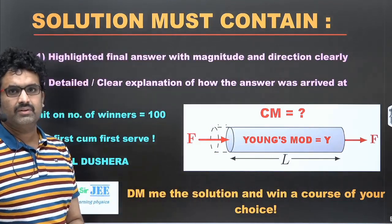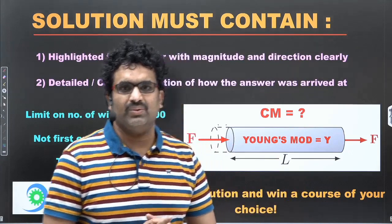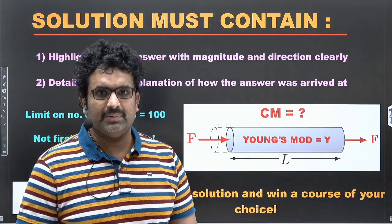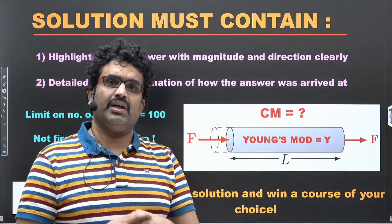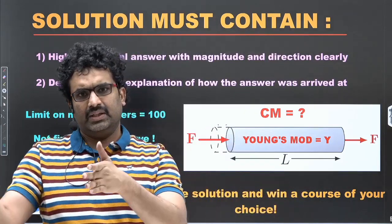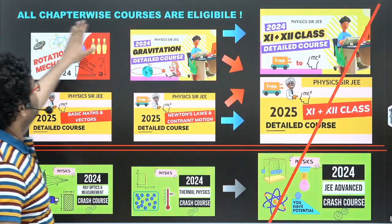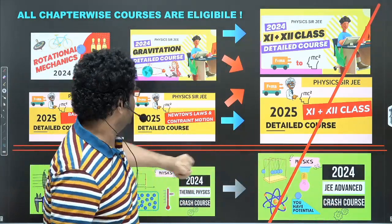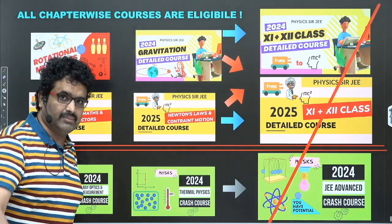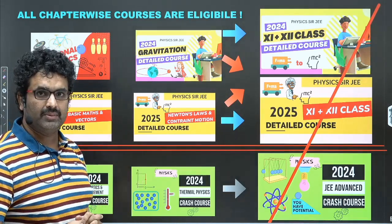DM me the solution and win the course. This problem was given as homework in one of our detailed course lectures, and I have not given the solution to my own course takers either, so all those people are also allowed to participate. Detailed course people can choose a chapter of crash course, and crash course people can choose a chapter of detailed course. All chapter-wise courses are available — not the full courses — whether it's 2024 detailed course, 2025 detailed course, or crash course chapters.